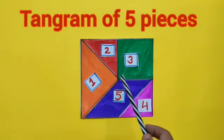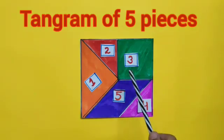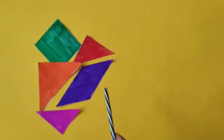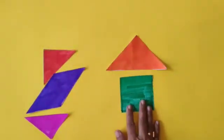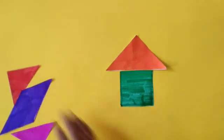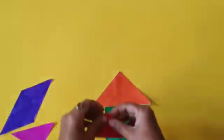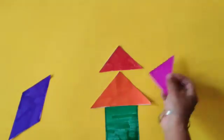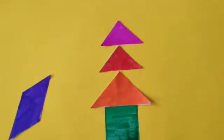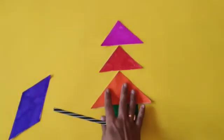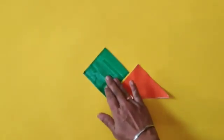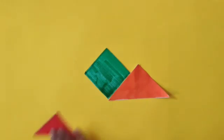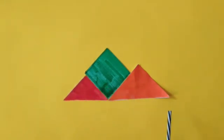And we can draw many different shapes with these cut pieces. Let's make a figure with these cut pieces. This is the figure of a heart. Let's see one more figure. What does this figure look like? It looks like a tree. This another figure looks like mountains. This figure is made with 3 pieces.